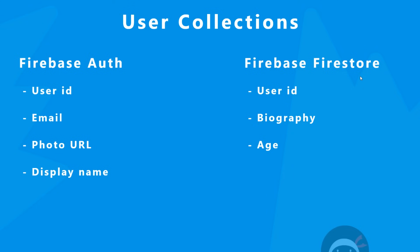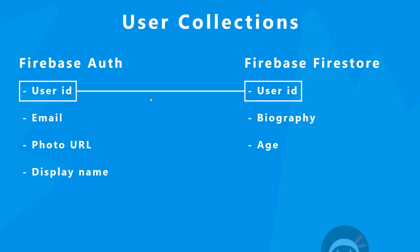What we're going to do is store the user ID as the unique ID for the actual document inside the collection. Remember how Firebase automatically creates those unique IDs for individual records — well, we could set our own unique ID and set it equal to the user ID from Auth. So these two IDs would be the same, meaning if we're logged in we know which record to query to get extra information like a biography or an age.